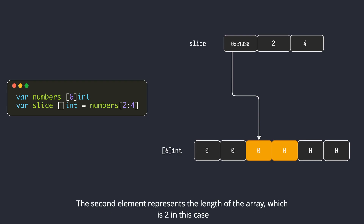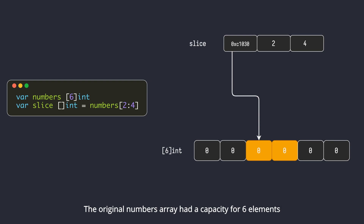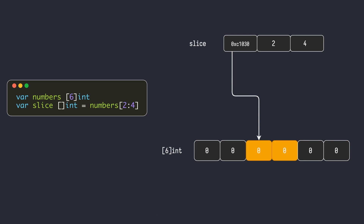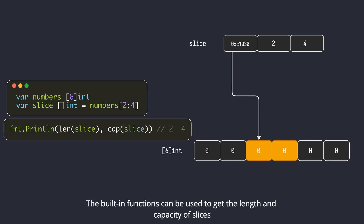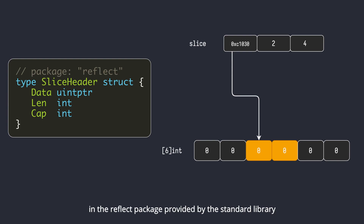The second element represents the length of the slice, which is two in this case. The third element is the capacity of the backing array. The original numbers array had a capacity for six elements; however, our slice starts from index 2 only, and thus it can only use the storage of the numbers array starting from that location — so the capacity will be four. The built-in functions can be used to get the length and capacity of slices. Go also exposes this runtime representation of the slice header as a struct type in the reflect package provided by the standard library.